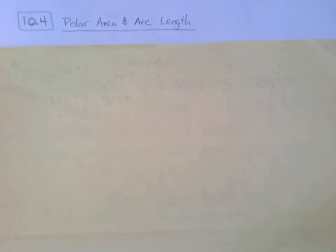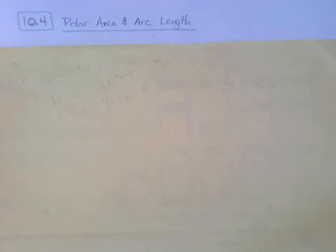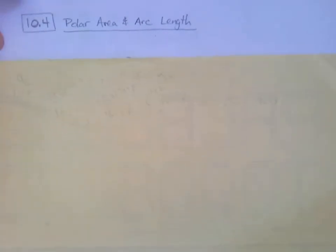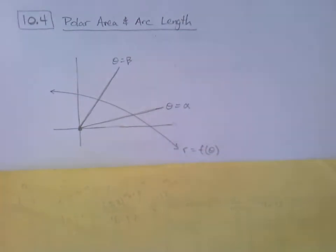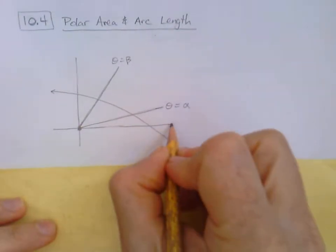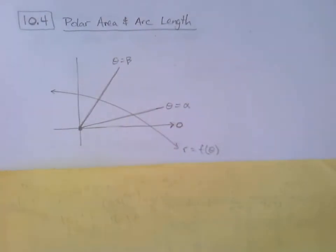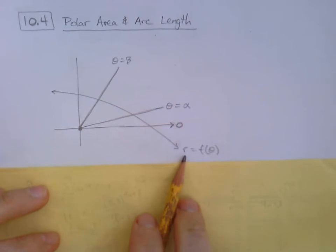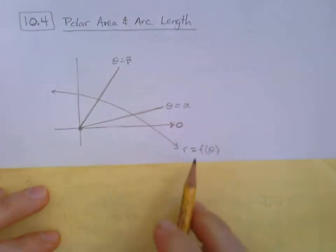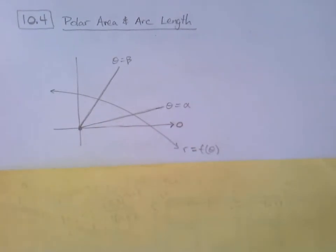In 10.4 we look at integration with polar coordinates. We will find areas of polar graphs and arc length at the very end. Polar area is really our primary focus here, so we're going to build into it and make sense of what the integral will look like. Let's take a general graph with our polar axis at theta equals zero and some function r equals f of theta sweeping through.